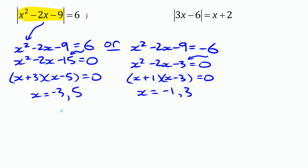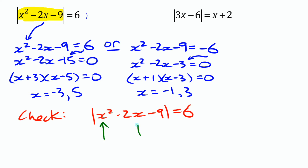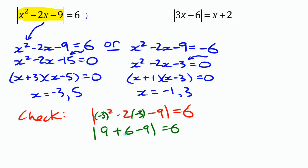Checking in the original equation: absolute value of x squared minus 2x minus 9 equals 6. Putting in negative 3: absolute value of 9 plus 6 minus 9 equals absolute value of 6, which is 6. That's true. Going through and putting the other three solutions in, you'll see they all work as well.